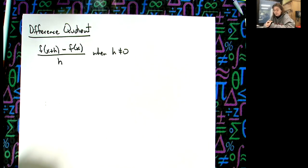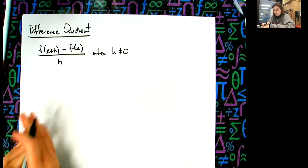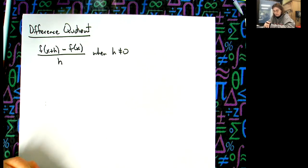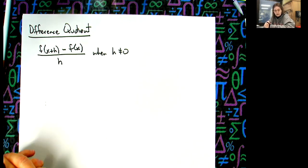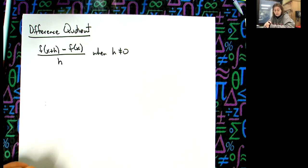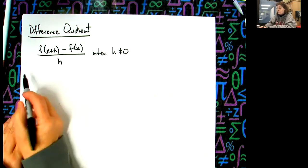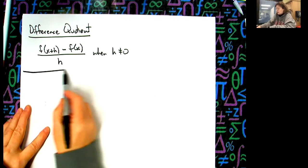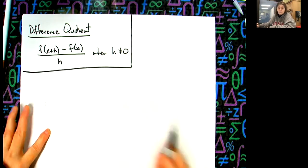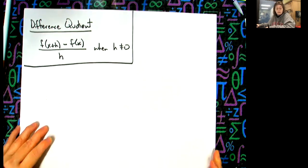There are all different types of versions. Your particular pre-calc book uses this one. When we come in and calculate this next year, we're going to use a more fancy one with more notation that you'll see in calculus. But for the most part, we're going to learn this one this year. This formula I'm going to make you memorize — the difference quotient.